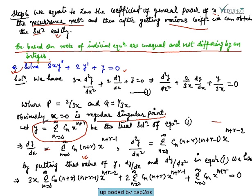Again differentiating with respect to x, we have d²y/dx² = summation from n=0 to infinity of c_n · (n+r)(n+r-1) · x^(n+r-2). Now by substituting these values of dy/dx and d²y/dx² into equation one, we have: 3x · summation c_n(n+r)(n+r-1)·x^(n+r-2) plus 2 · summation c_n(n+r)·x^(n+r-1) plus summation c_n·x^(n+r) = 0.